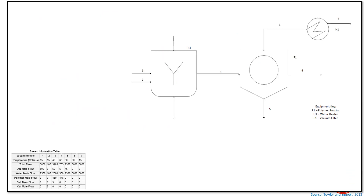Now let's see how to read a PFD. This is a typical PFD showing arrows, symbols, and equipments. There are stream numbers mentioned on it. Going to equipment tagging, you can see R1, F1, H1 — R1 stands for polymer reactor, H1 stands for water heater, and F1 stands for vacuum filter. This type of tagging is done in your PFD so you are able to know which equipments are involved in the process. There is also a stream information table.